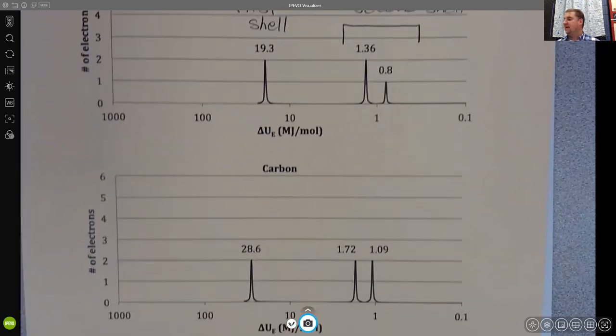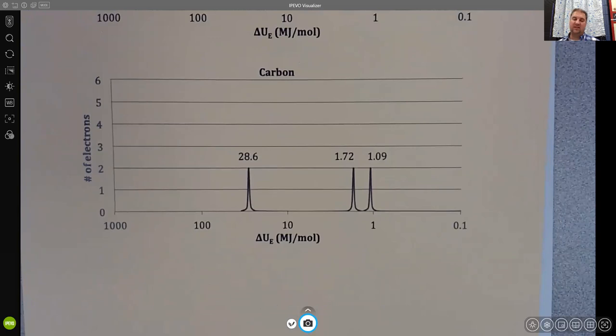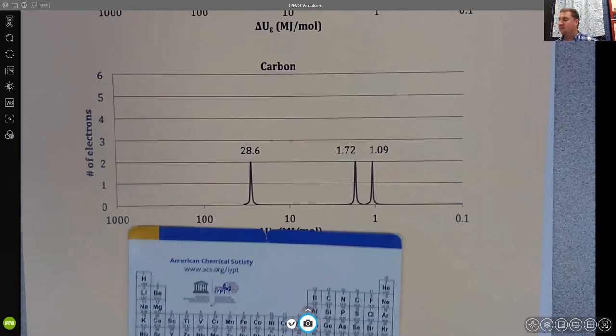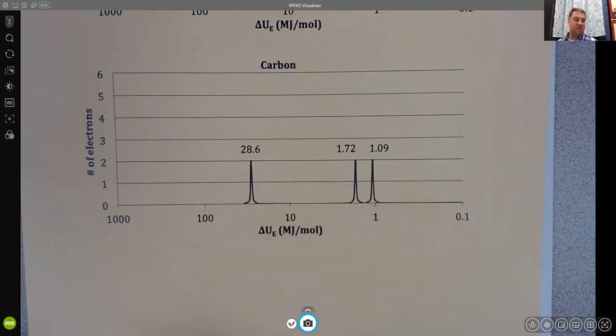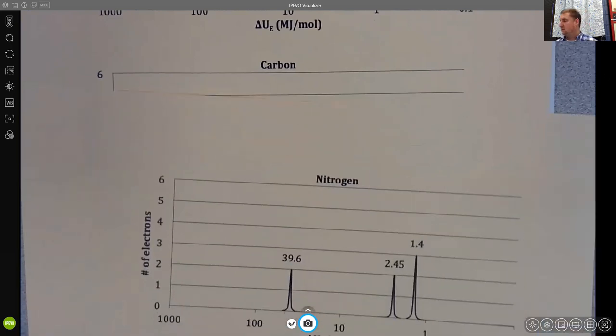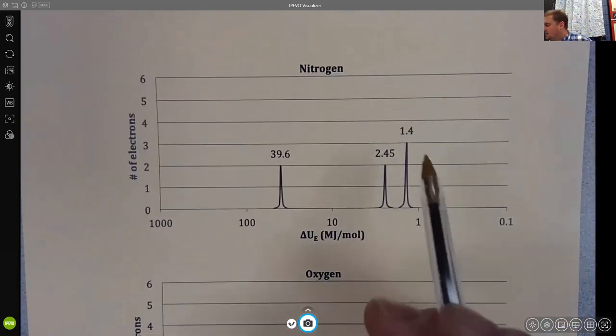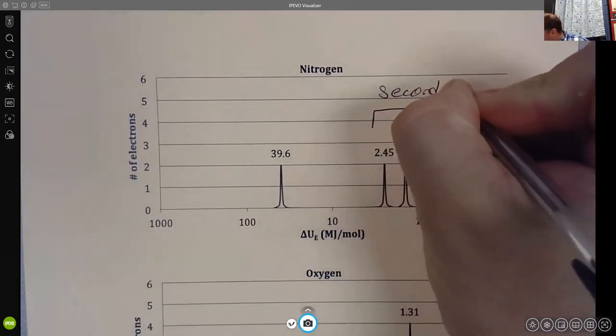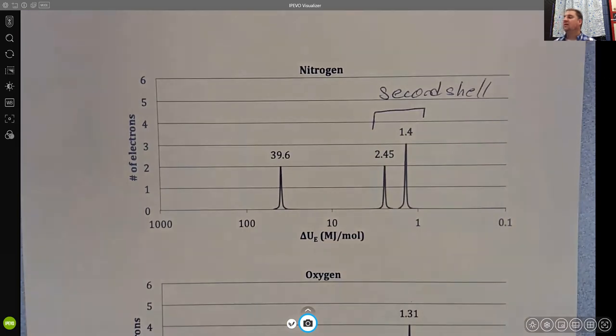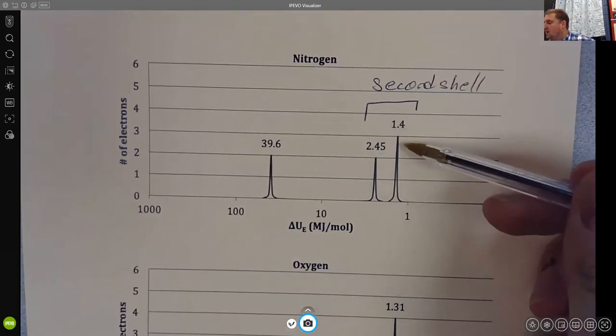That second peak grows and it's now equal to two. What do you think is going to happen if we continue and we go from carbon to nitrogen and then to oxygen? When we get to nitrogen and oxygen, we see that that second peak in the second shell now holds three electrons.